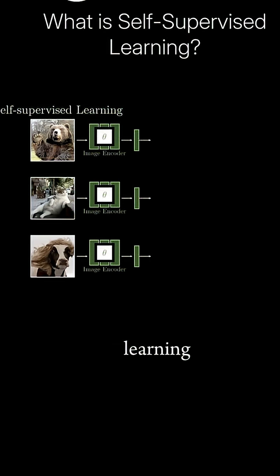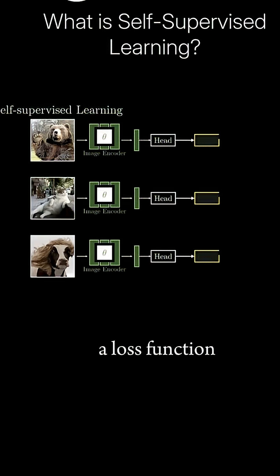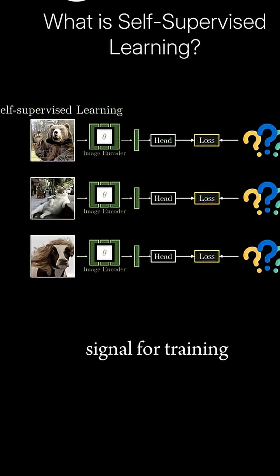Just like supervised learning, we extract image features, add an output head, and use a loss function. The challenge here is to create a supervision signal for training, but without relying on any human-provided labels.